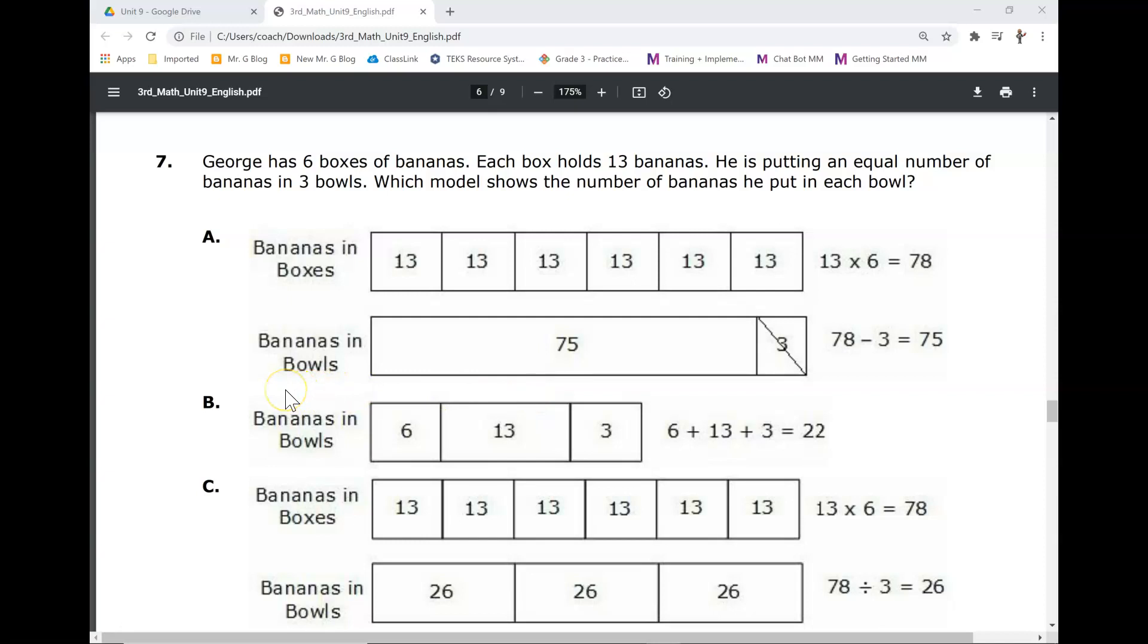Number seven. George has six boxes of bananas. Each box holds 13 bananas. He is putting an equal number of bananas in three bowls. Which model shows the number of bananas he put in each bowl? Bananas in boxes. Bananas in bowls.